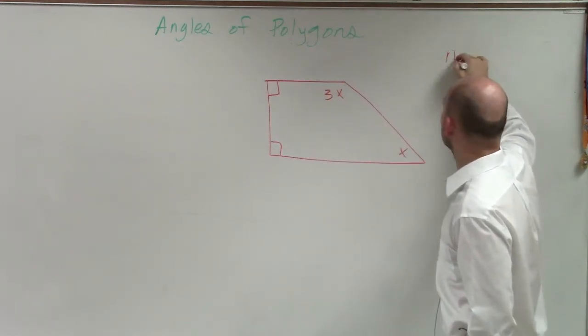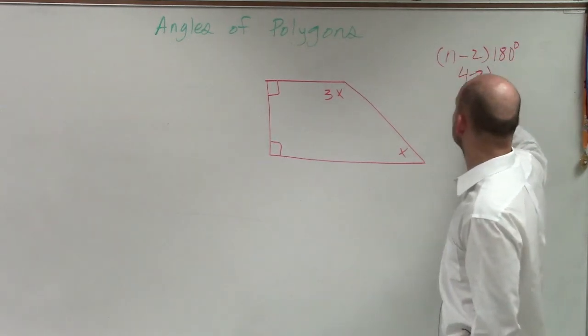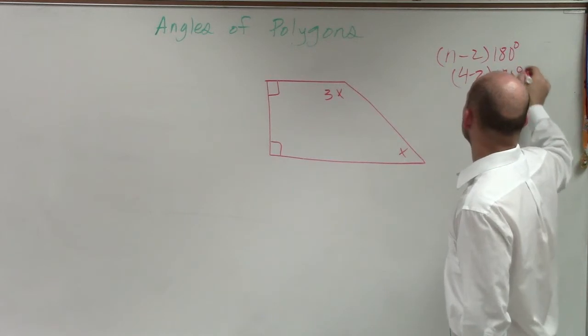So therefore, by plugging in our formula, n minus 2 times 180. 4 minus 2 times 180 degrees.